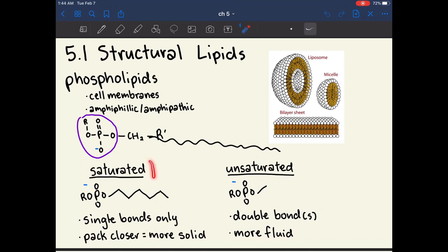Phospholipids can be either saturated or unsaturated. If it's saturated, it means that the hydrocarbon chain has single bonds only. And this means that they can pack closer, which means that the cell membranes will be more solid.